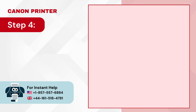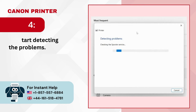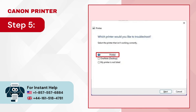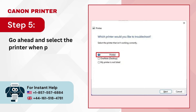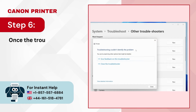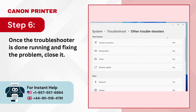Step 4 — It'll start detecting the problems. Step 5 — Go ahead and select the printer when prompted, then click Next. Step 6 — Once the Troubleshooter is done running and fixing the problem, close it.